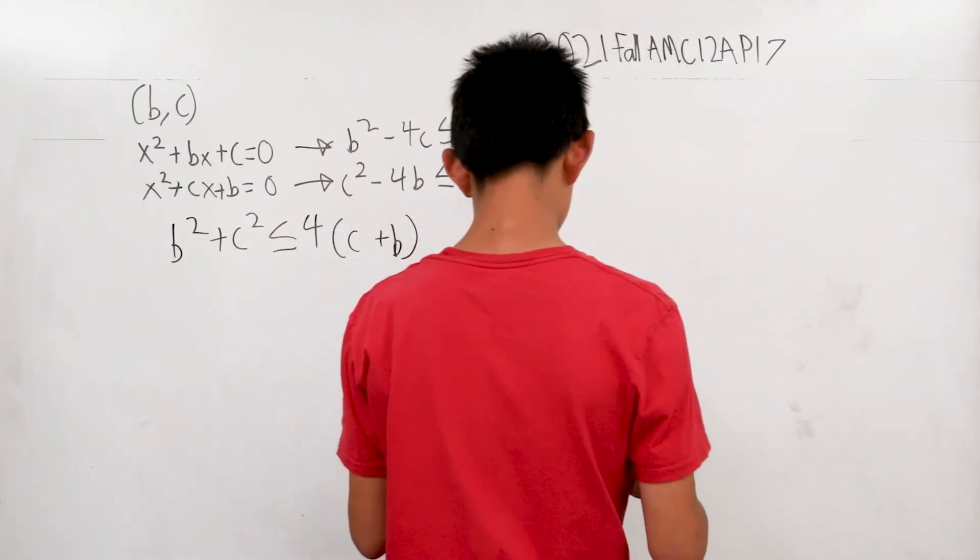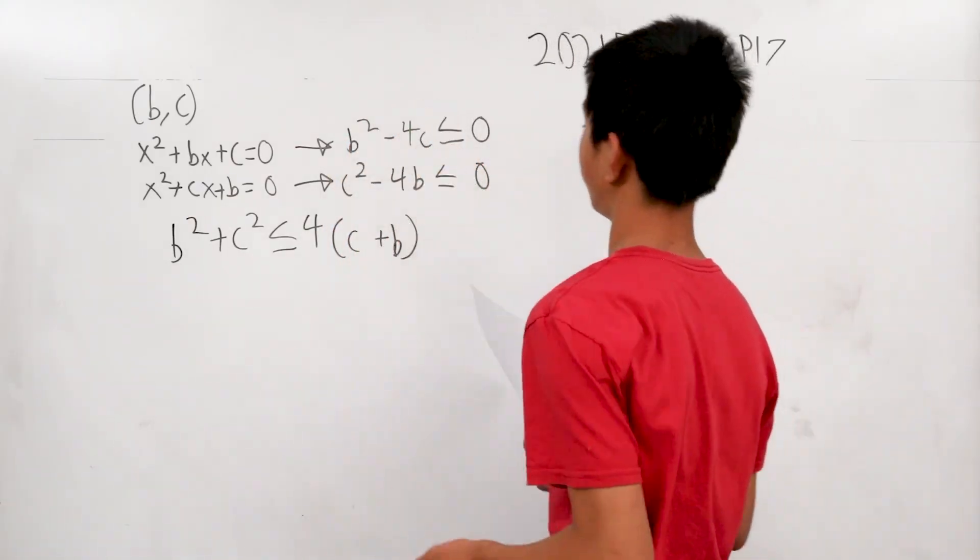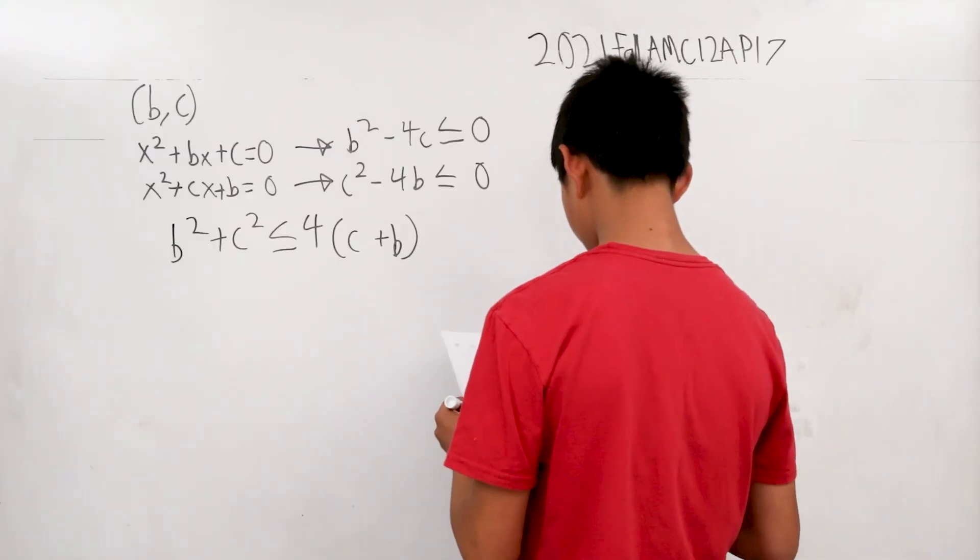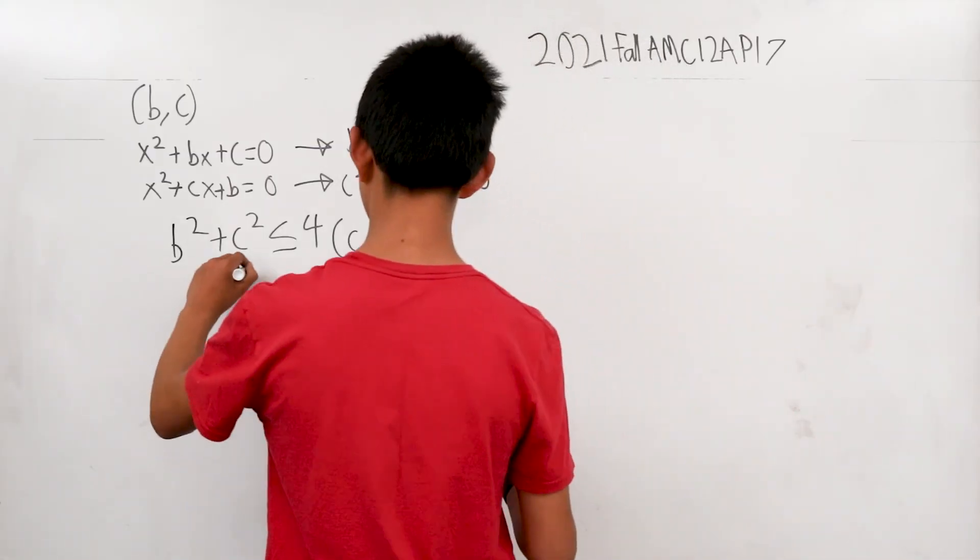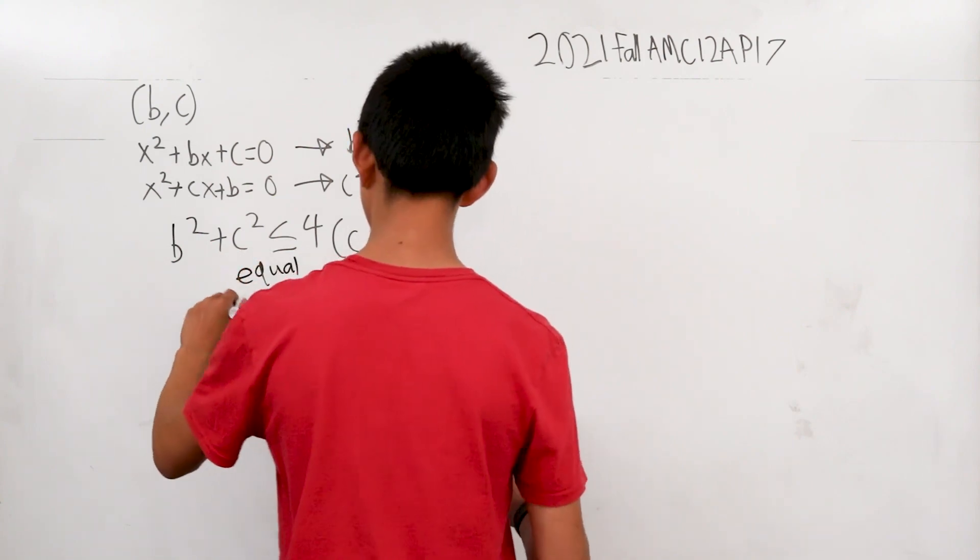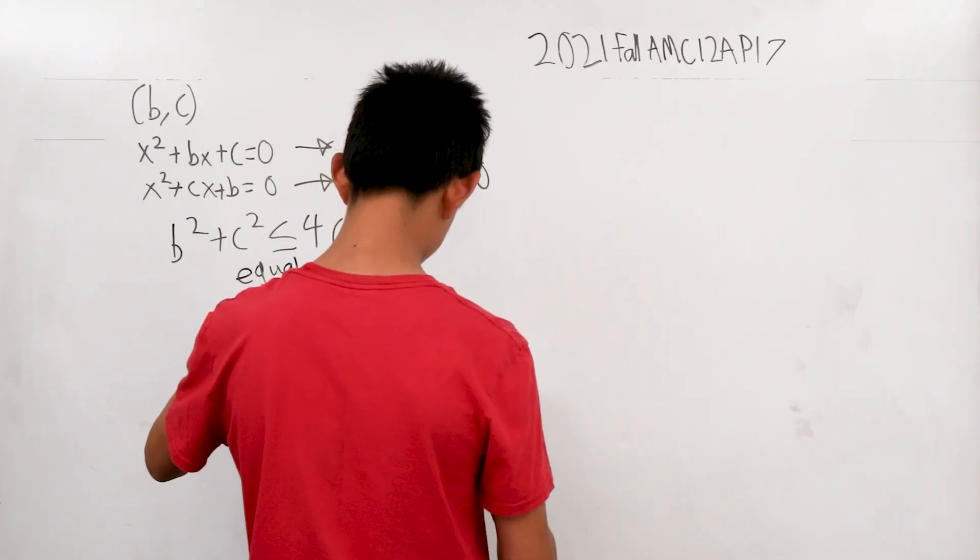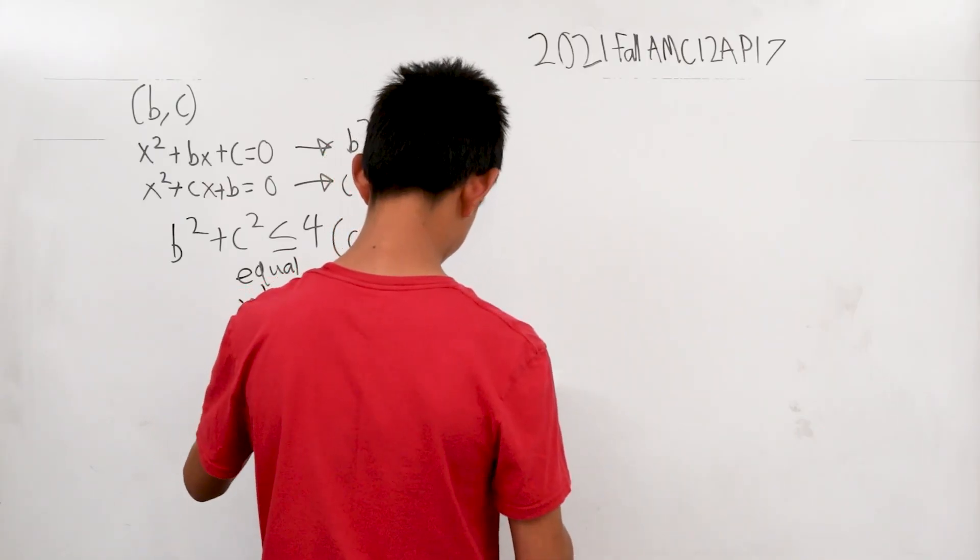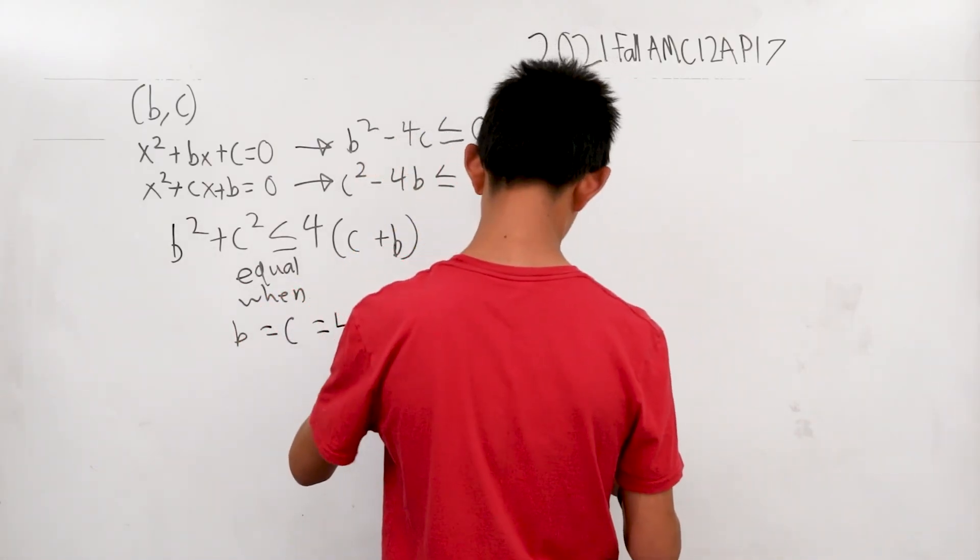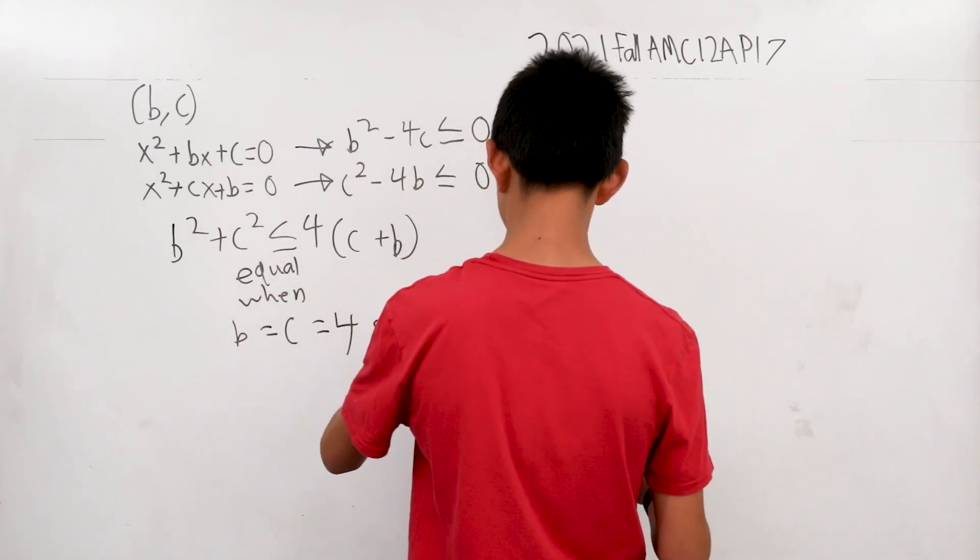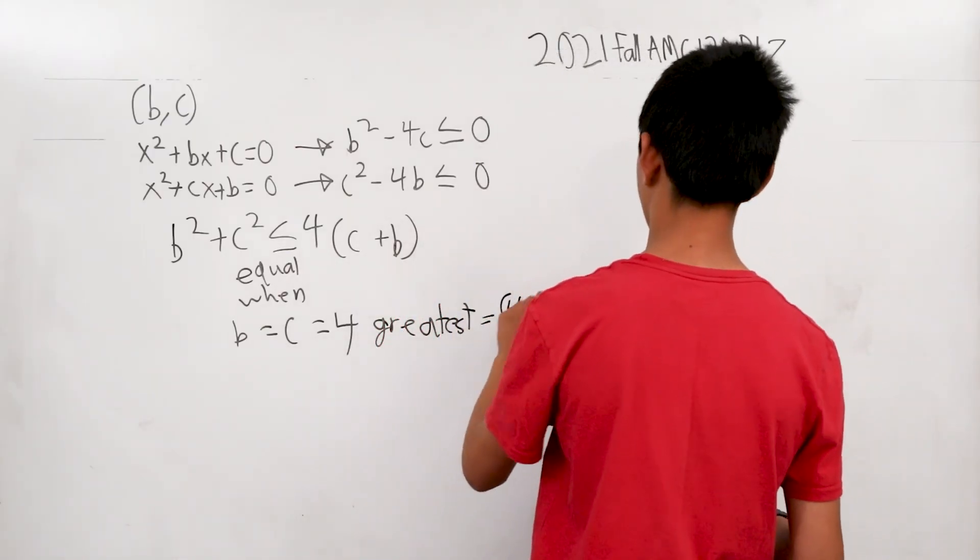That's when you add these two together. Again, move the 4c and 4b to the other side. Now there's a clear solution. These are equal when b = c = 4. Therefore, the greatest is (4, 4) for paired integers.